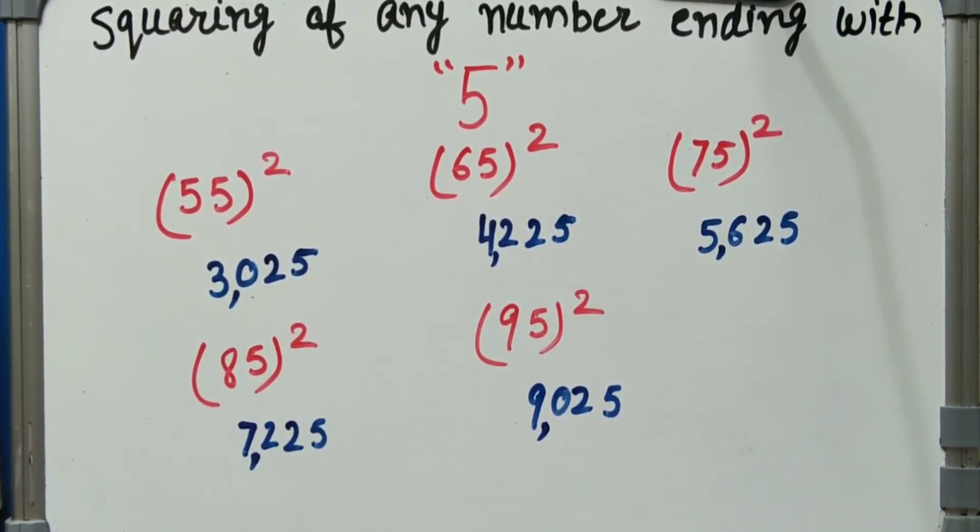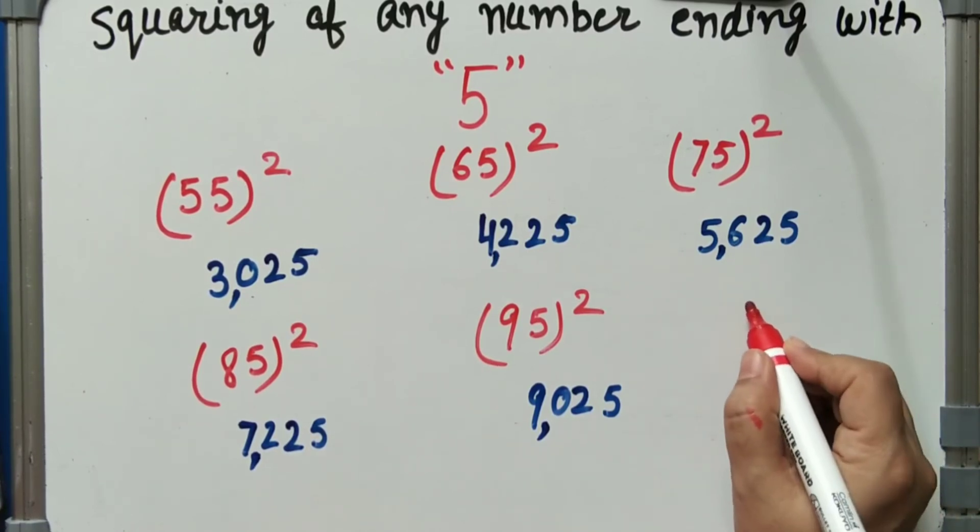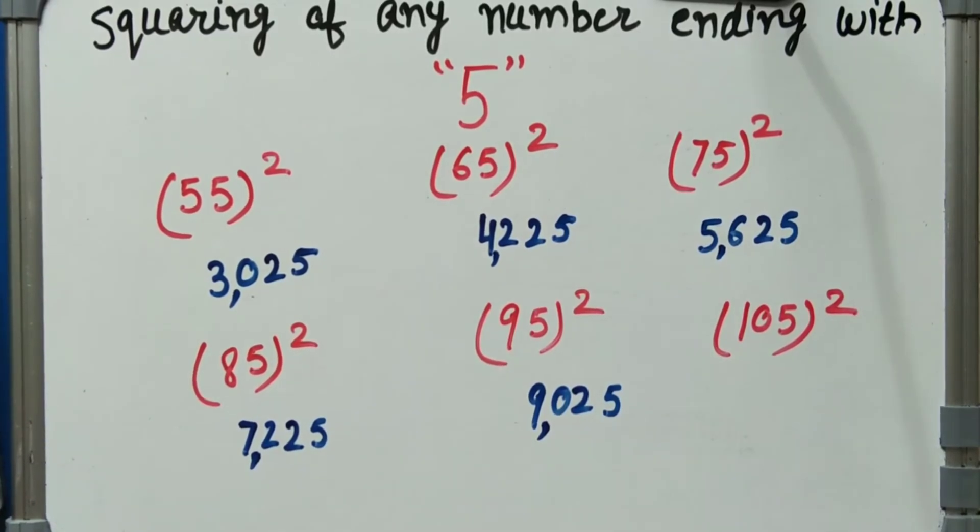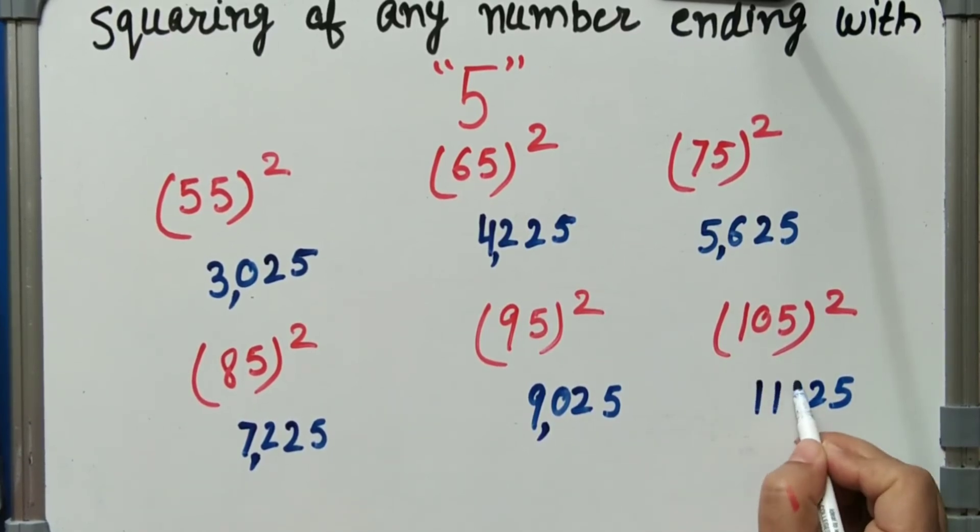Next we will take the example of 105. 105 square: it means 5 square is 25, 10 into 11, that is equal to 110, 25.